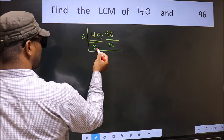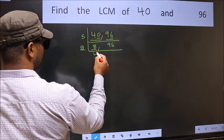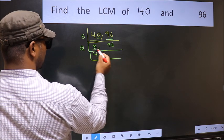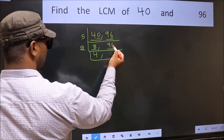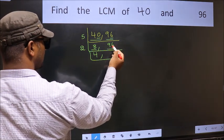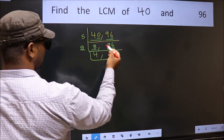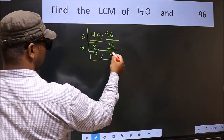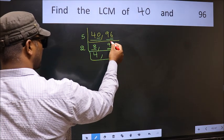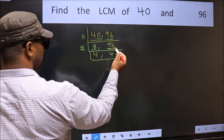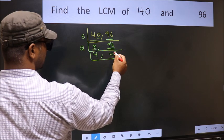Now here we have 8. 8 is 2 times 4, so 8. The other number is 96. Last digit 6 is even, so this is divisible by 2. First number: 9 — a number close to 9 in the 2 table is 2 times 4 equals 8. 9 minus 8 is 1, carried forward: 16. When do we get 16 in the 2 table? 2 times 8 is 16.